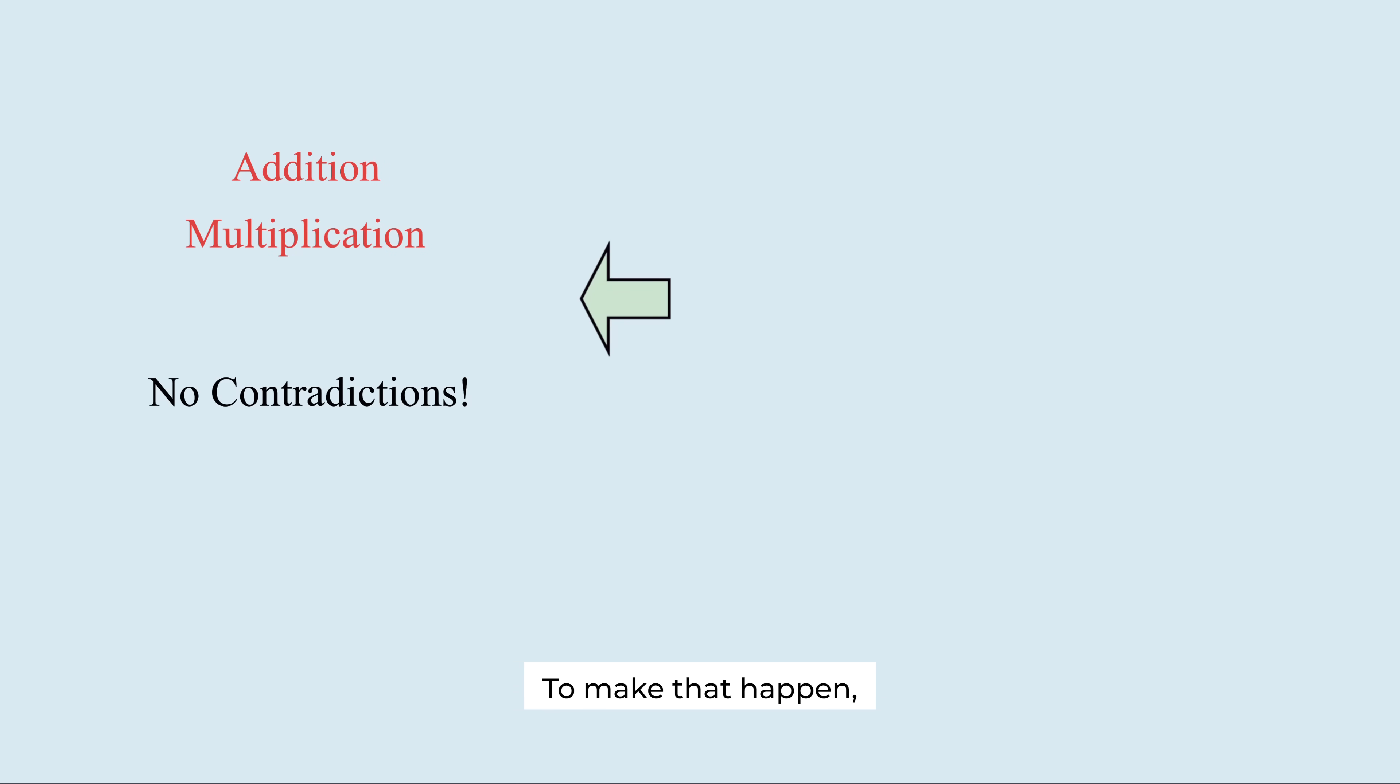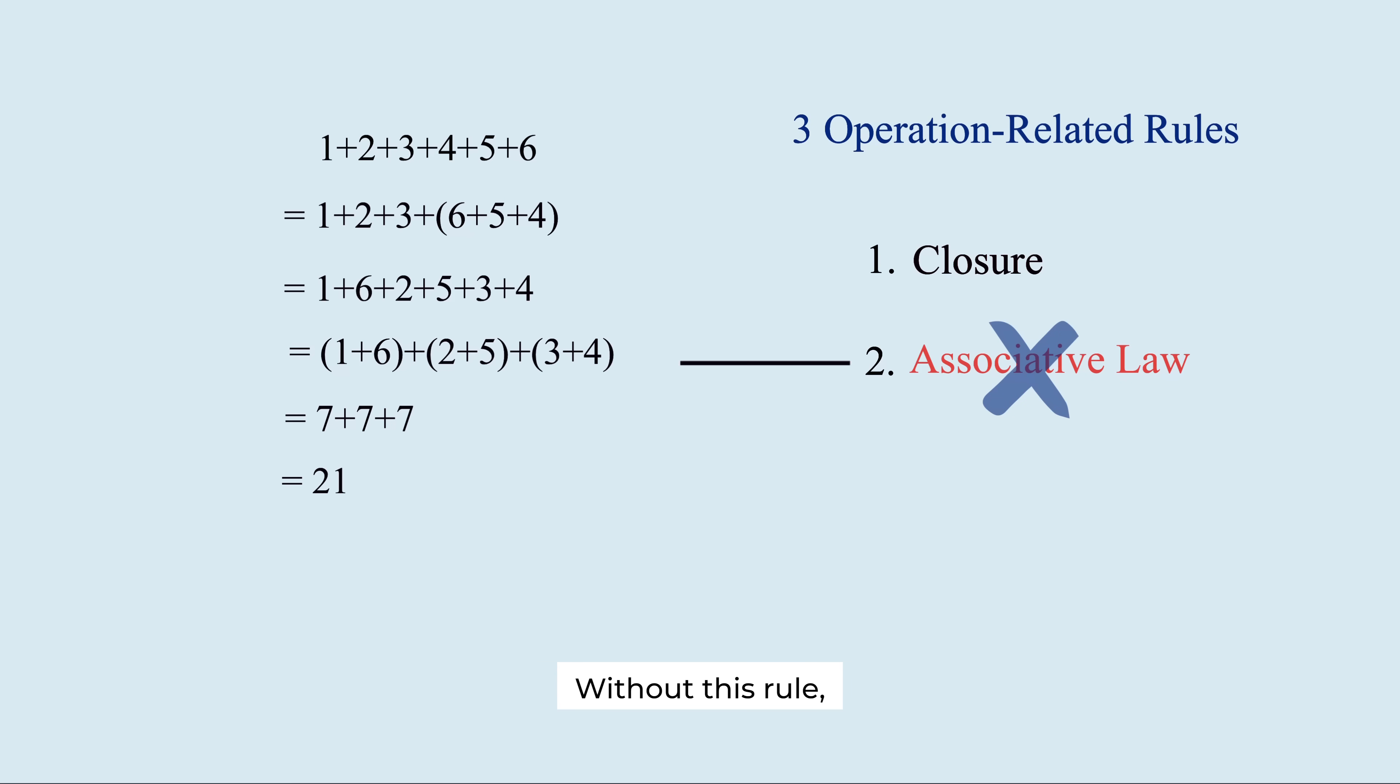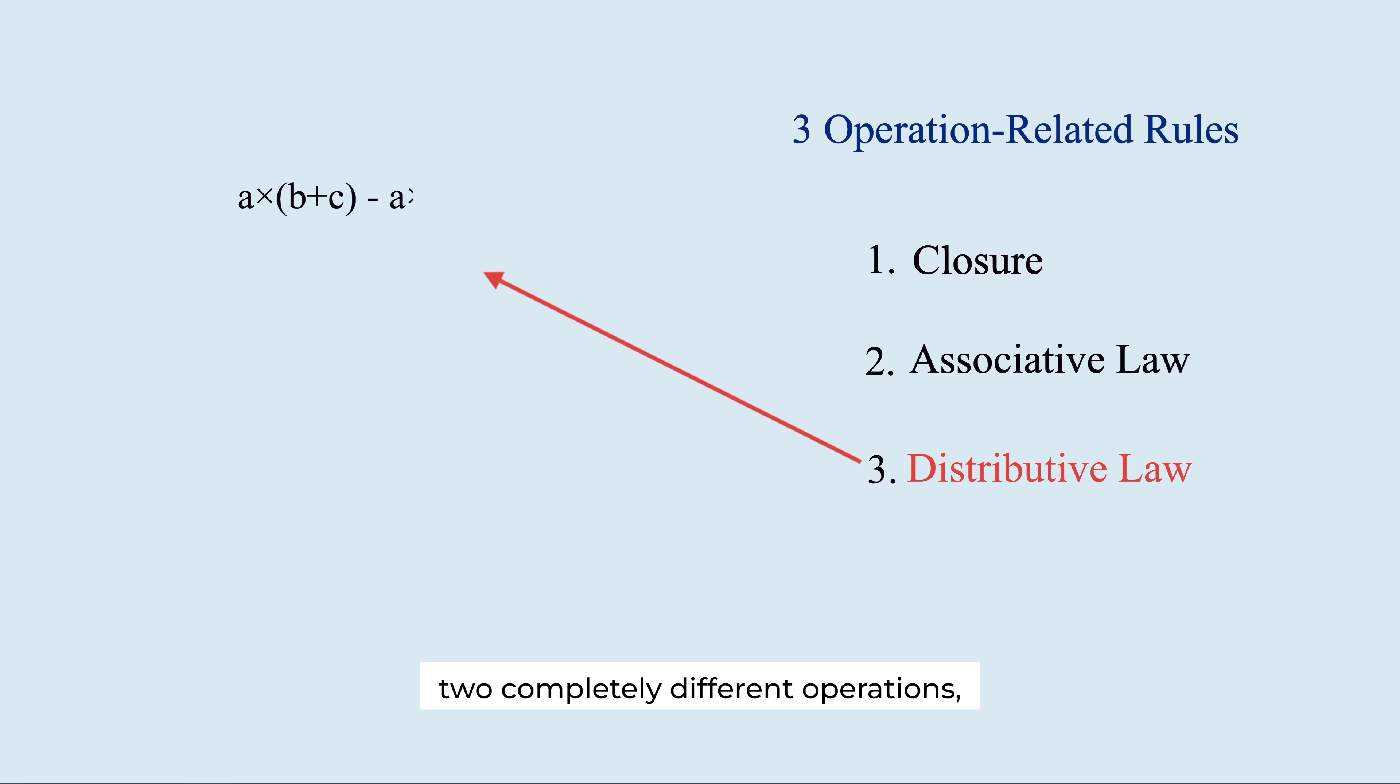To make it happen, 3 essential operation-related rules must hold. Number 1, closure. Which means that when you perform an operation, the result must stay inside the system. Number 2, the associative law. Without this rule, you couldn't group parts of an expression or break them apart. Number 3, the distributive law. This rule connects two completely different operations, addition and multiplication, and makes them work together without conflict.